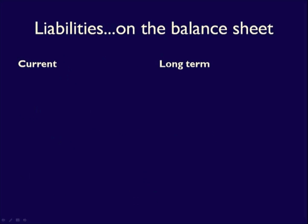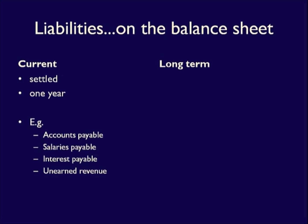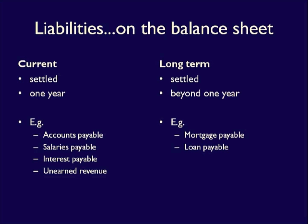Like assets, liabilities are divided into current and long-term, again to provide information to stakeholders so that they can make decisions. Current liabilities are obligations that will be settled in one year, and include accounts such as accounts payable and unearned revenue. Long-term liabilities are debts settled beyond one year. Unlike long-term assets, they don't have any subcategories — all long-term liabilities are simply listed together. The accounts included in long-term almost always have the word 'payable' as part of the account name. Check out the Financial Statement Elements video for more detail.